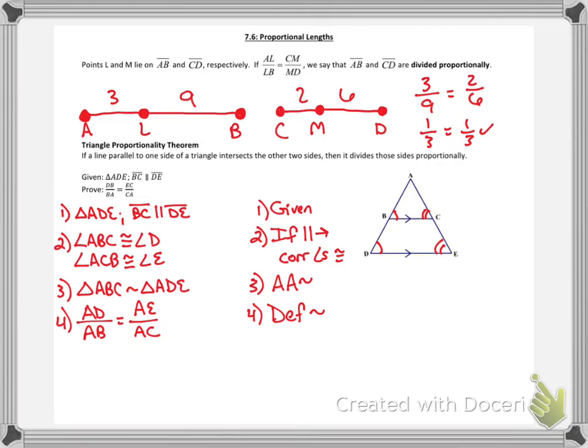We need to somehow turn this fraction to look like our proof statement, because we have some similar pieces here. My denominators are currently the same, AB and AC, but my numerators are different, so we need to find a way to trade those out. AD is the same thing as DB and BA added together. AE is the same thing as AC and CE added together. We can do that because of the segment addition postulate. We know a larger segment is equal to the sum of the smaller segments. So I'm going to say AD is equal to AB plus BD. AE is equal to AC plus CE.